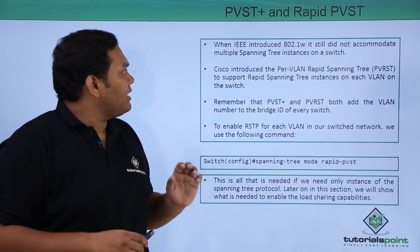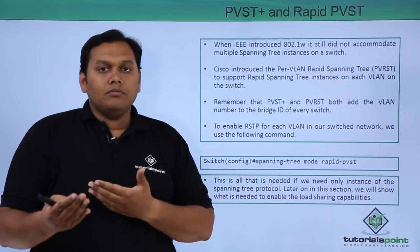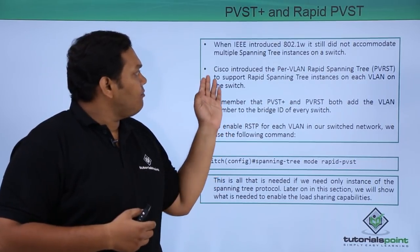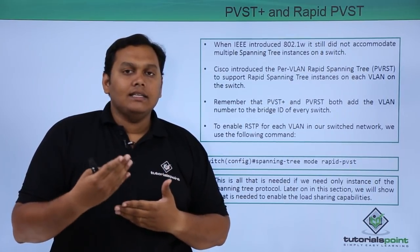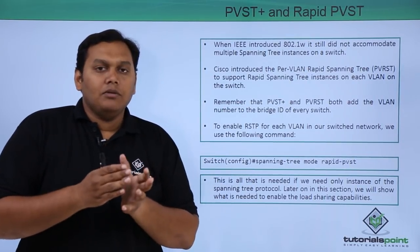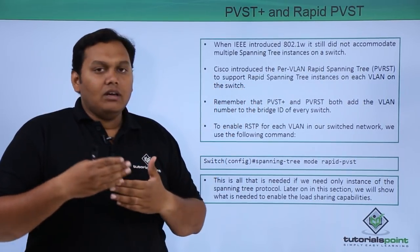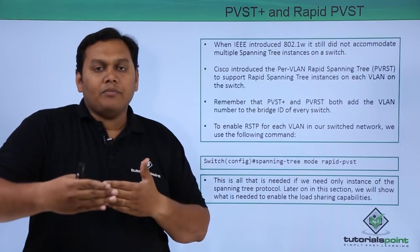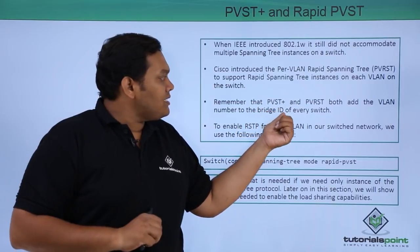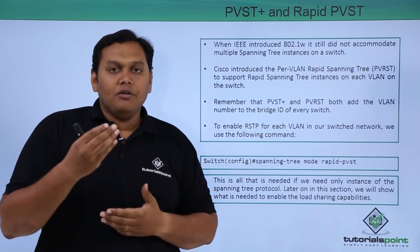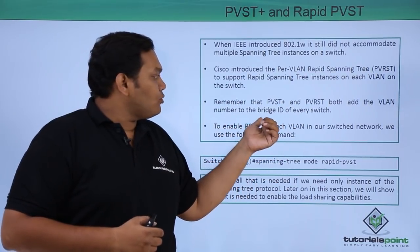While 802.1W (Rapid STP) was not yet fully accommodated, IEEE introduced multiple spanning tree instances per switch. This led to the introduction of Rapid PVST, which works on each network segment on a switch rather than the entire switch.